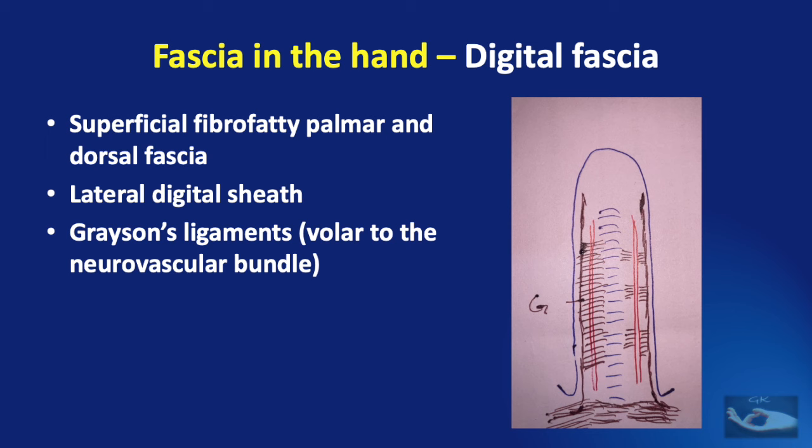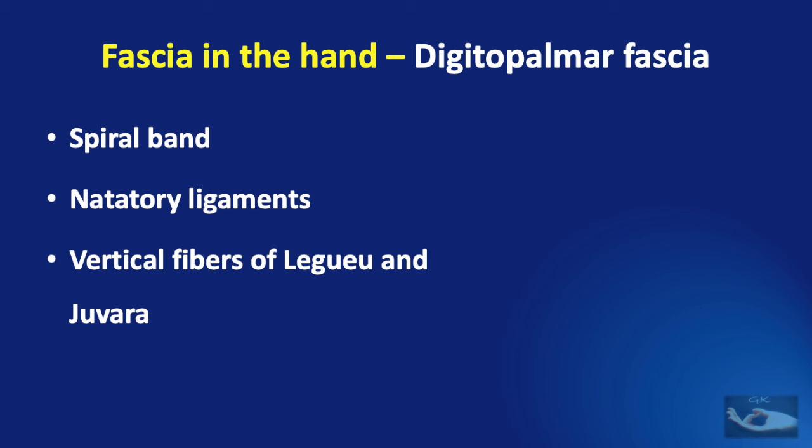The fascia present at the junction of the fingers and the palm consists of fibres like the spiral band, the natatory ligaments, and the vertical fibres of Legueu and Juvara. But we can understand these fibres better when we study the fascial system in the palm.